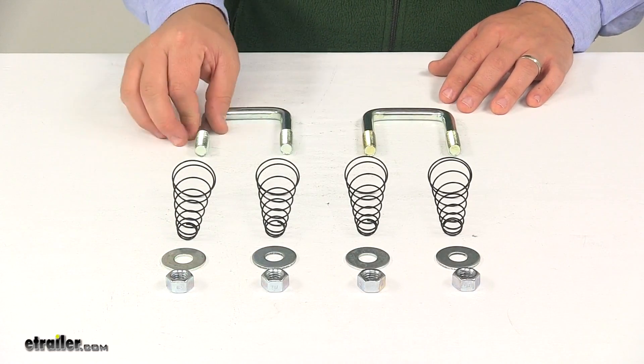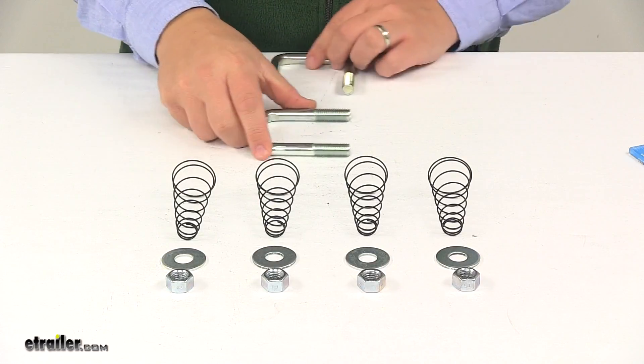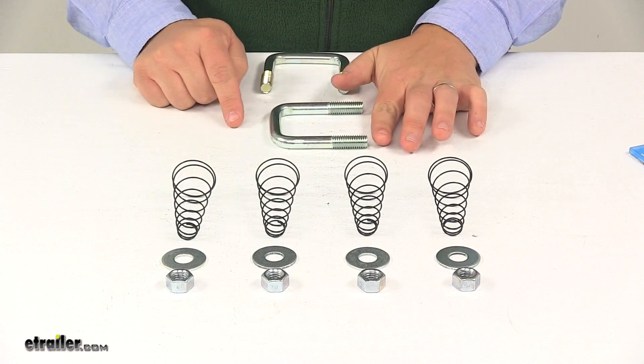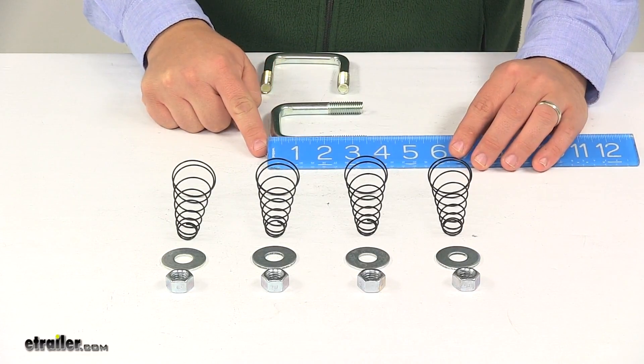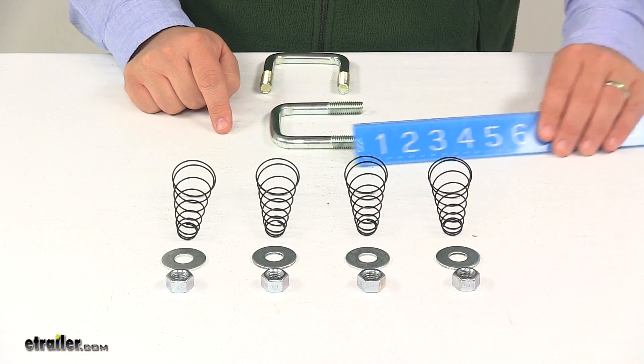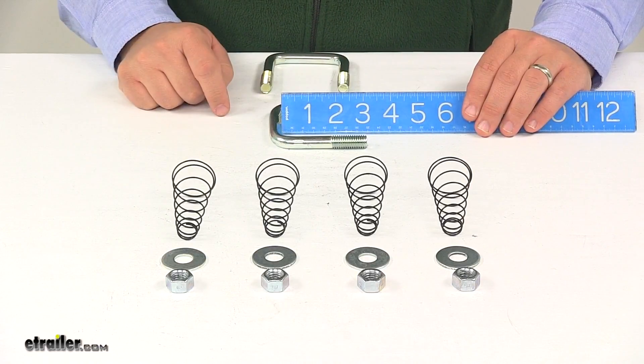A few measurements I want to go over with you real quick. The diameter is a half inch on the U-bolts. Measuring from the bottom of the thread to the top of the U-bolt, that measures three and a half inches. From the bottom of this portion here to the bottom of the threads is about three inches.